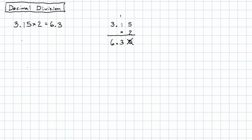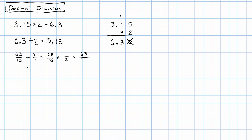So we would like to find that 6.3 divided by 2 gives us 3.15. The first thing that might occur to us is to think of what happens in fraction division. Well, 6.3 — that's 63 tenths divided by 2, which is two whole things. That's 63 tenths times one half.